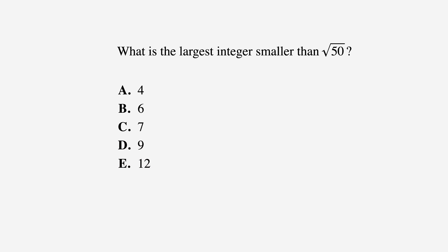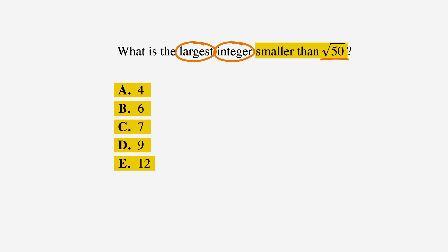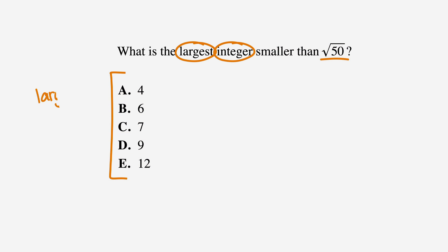We know that our answer is smaller than the square root of 50, so we'll underline that. The keywords indicate that we're looking for the largest integer, so we'll circle 'largest' and 'integer'. So the answer choices represent the largest integer that's less than the square root of 50 — let's label them 'less than the square root of 50.'